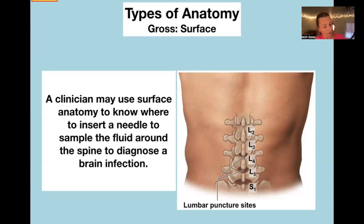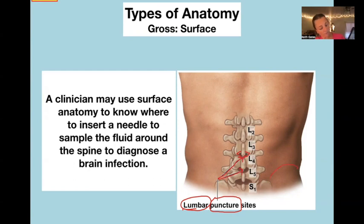They'll perform what's called a lumbar puncture — 'lumbar' for lower back, 'puncture' for sticking a needle in. They choose one of the little gaps in the bones in the lower back area because it's safest. They'll look at the hip bones and count up the processes you can feel underneath the skin — that's a use of surface anatomy.